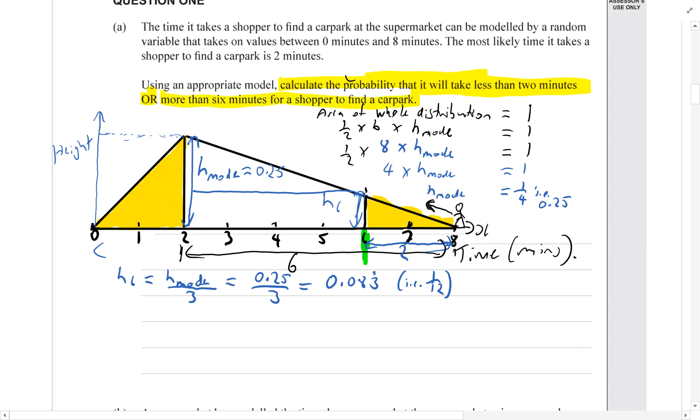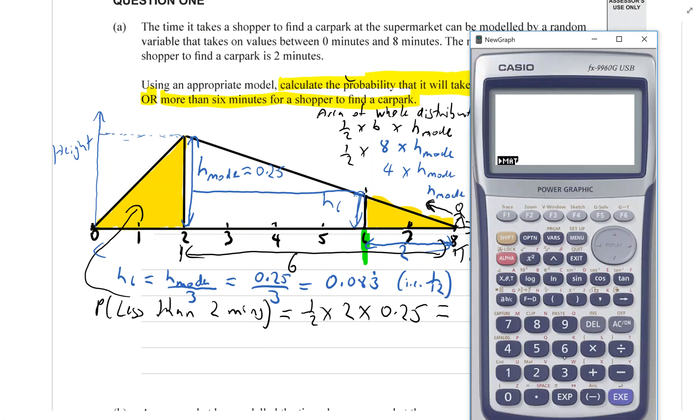So, probability that it takes less than two minutes is going to be dealing with this triangle here. So, half times its base, which is two, times its height, which is 0.25. And we get 0.25.